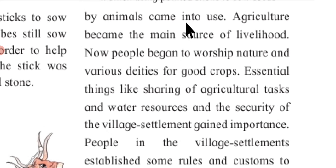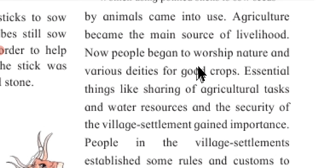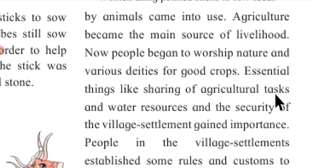Bi-animals came into use and agriculture became the main source of livelihood. Now people began to worship nature and various deities for good crops. Essential things like sharing of agricultural tasks, water resources, and the security of the village settlement gained importance.